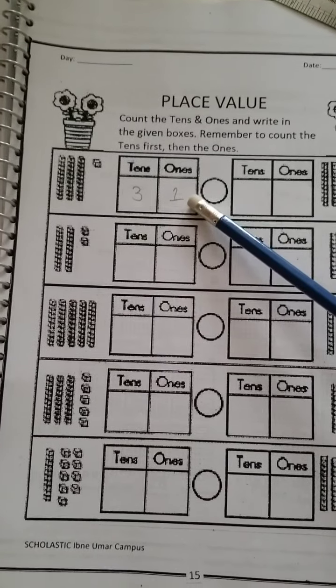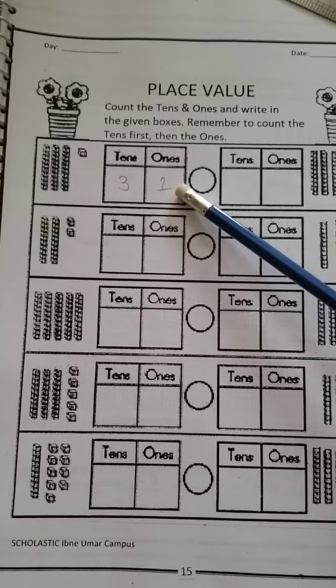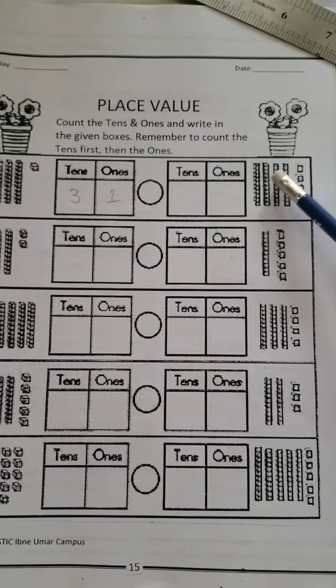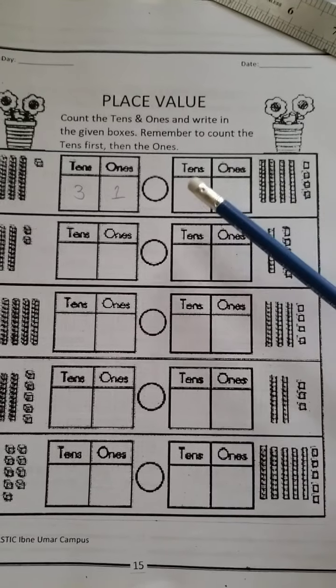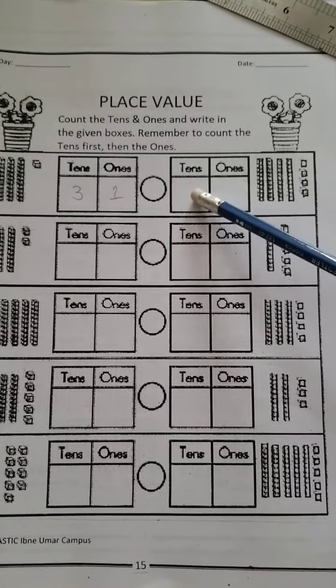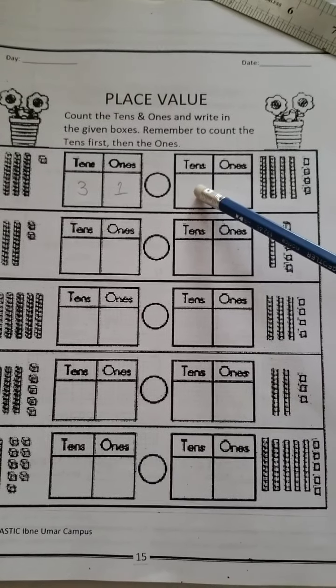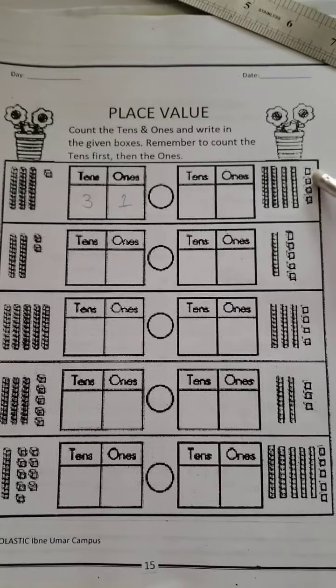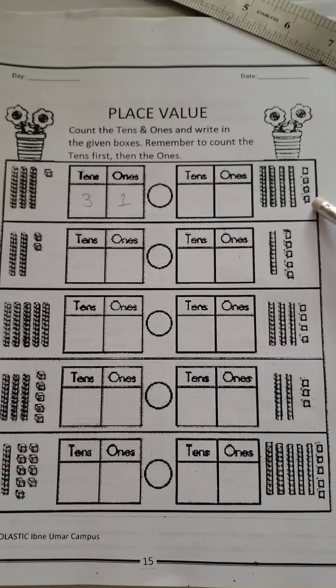Three tens. So you will write down here three. And how many units are here? One unit. And you will write it here. Units and ones is the same thing. So you just have to write down the total amount. You don't have to write the expanded form.